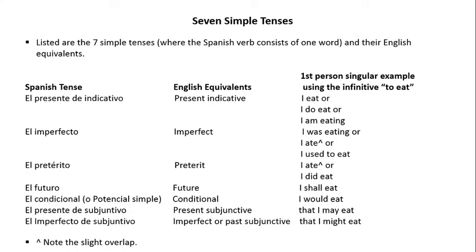So let's review this table starting at the upper left. The first Spanish tense is el presente de indicativo — in English, the present indicative. The first person singular example using the infinitive 'to eat' is: I eat, or I do eat, or I am eating. Next is el imperfecto — in English, the imperfect. The example is: I was eating, or I ate, or I used to eat. Next is el pretérito — in English, the preterite. The example is: I ate, or I did eat. Next is el futuro — in English, the future tense. The example is: I shall eat.